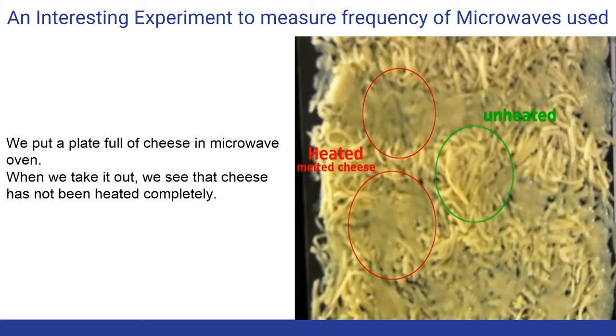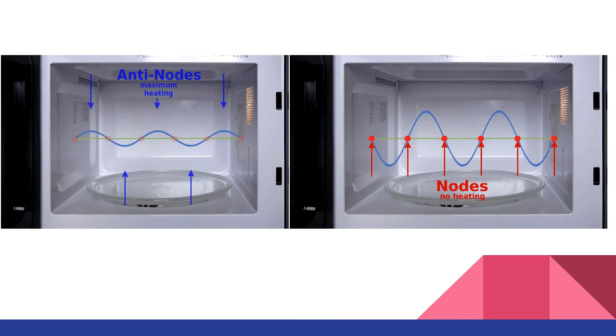Now we perform a very simple experiment in microwave oven to measure the frequency of microwaves. We put a plate full of cheese in the microwave chamber such that it does not rotate. When we take it out after some time, we see that cheese has not melted completely and evenly. Cheese was somewhat like shown in the picture where some of its portion melted completely and some was unheated.